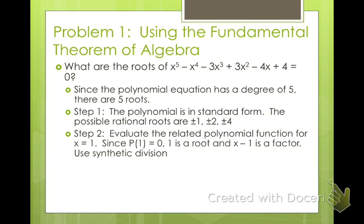So I went ahead and did the first one for you. P of 1 equals 0. That means x minus 1 is our factor. So if we know P of 1 is a solution, we can use synthetic division in order to make this into a smaller polynomial. So I'm going to go ahead and write 1 here. Then I have 1, negative 1, negative 3, 3, negative 4, and 4. Bring down the 1. 1 times 1 is 1. That's 0.